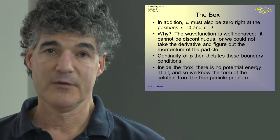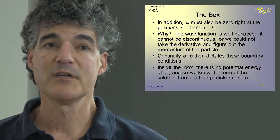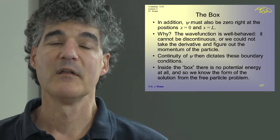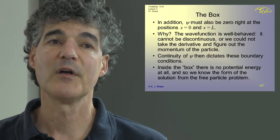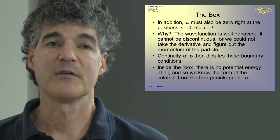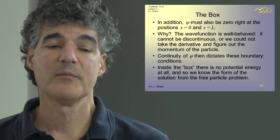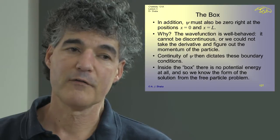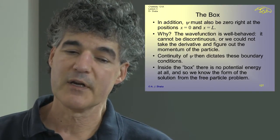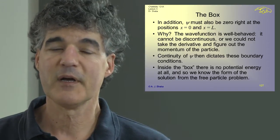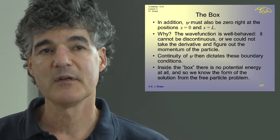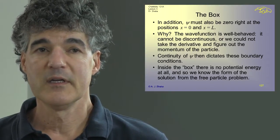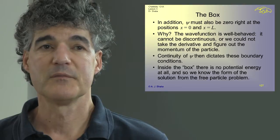In addition to the wave function being zero outside the box, it has to be zero right at the edges, because we want the wave function to be continuous—a well-defined function we can take the derivative of. That's pretty much like a guitar string: if you put your finger on a fret, holding the string down there, you can pluck the string to get different amounts of energy, and you get a certain standing wave pattern.